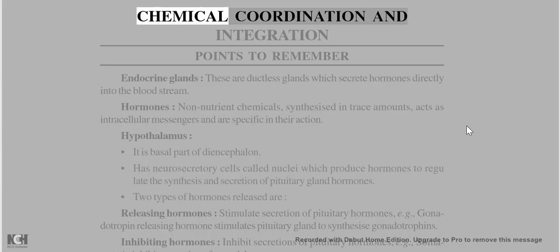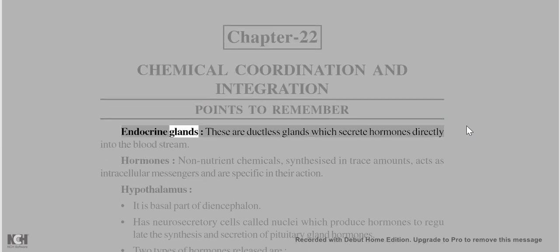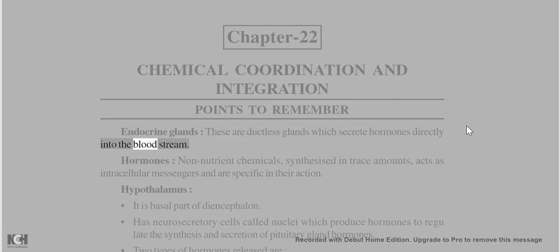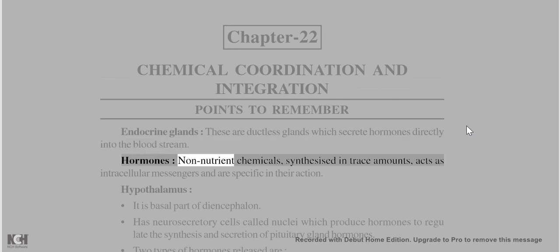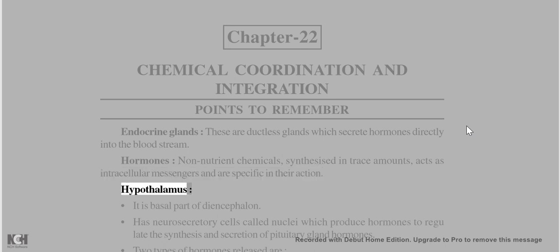Chapter 22: Chemical Coordination and Integration – Points to Remember. Endocrine glands are ductless glands which secrete hormones directly into the bloodstream. Hormones are non-nutrient chemicals synthesised in trace amounts, act as intracellular messengers, and are specific in their action.